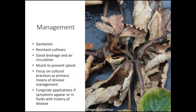Management of all three leaf diseases is similar. Sanitation is critical — clean up at the end of the season and during the season if disease becomes severe. Use resistant cultivars when possible. Assure good drainage and good air circulation to help dry leaves as soon as possible. Maintain mulch in matted row systems to prevent splash and to keep stems and leaves from touching the soil.